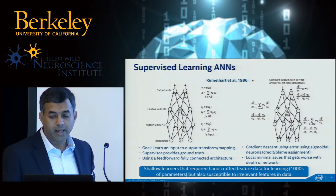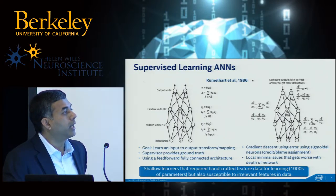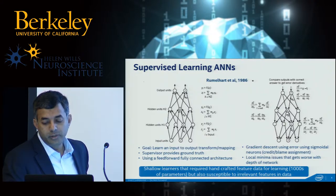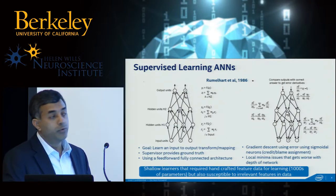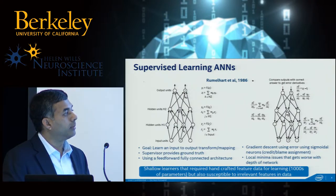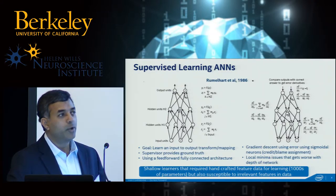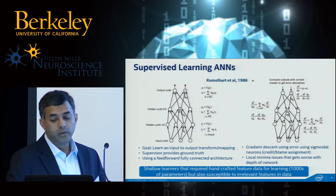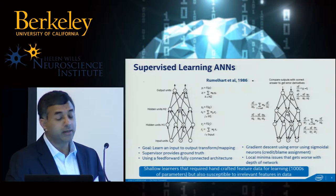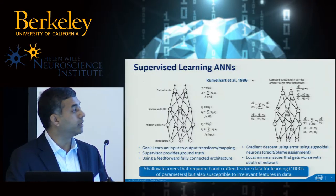The learning algorithm was based on gradient descent, where you use the error between the desired output and the actual output. Based on differentiable functions such as sigmoidal neurons, you would figure out a way to assign credit and blame for the various weights in the network. Early models were shallow because of the local minima problem, which gets worse with the depth of the network. Shallow learners required handcrafted feature data to minimize the number of layers.